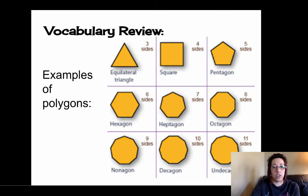Okay, so let's look at examples of polygons. Go ahead and create a little table in your notes and jot down these examples. We have an equilateral triangle has three sides. A square or rectangle would have four sides.